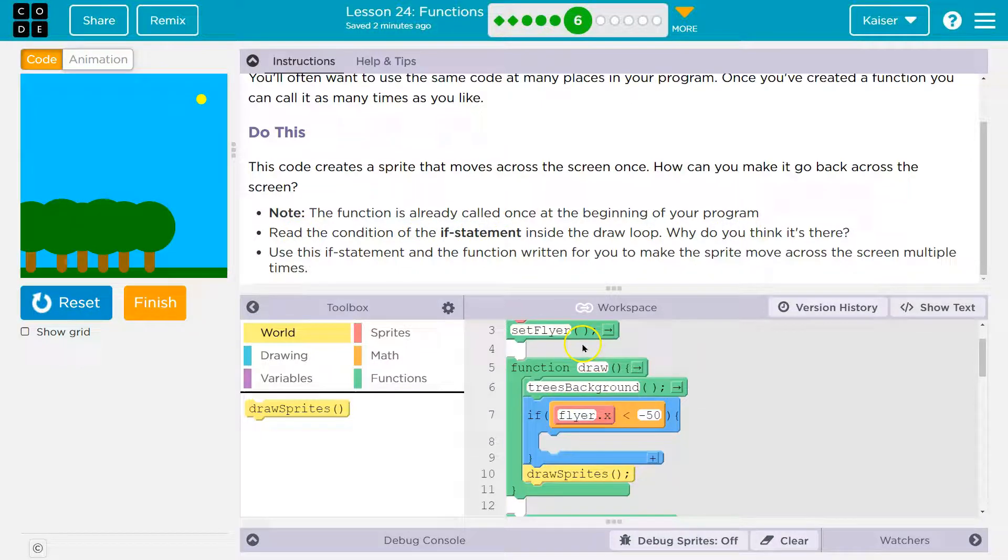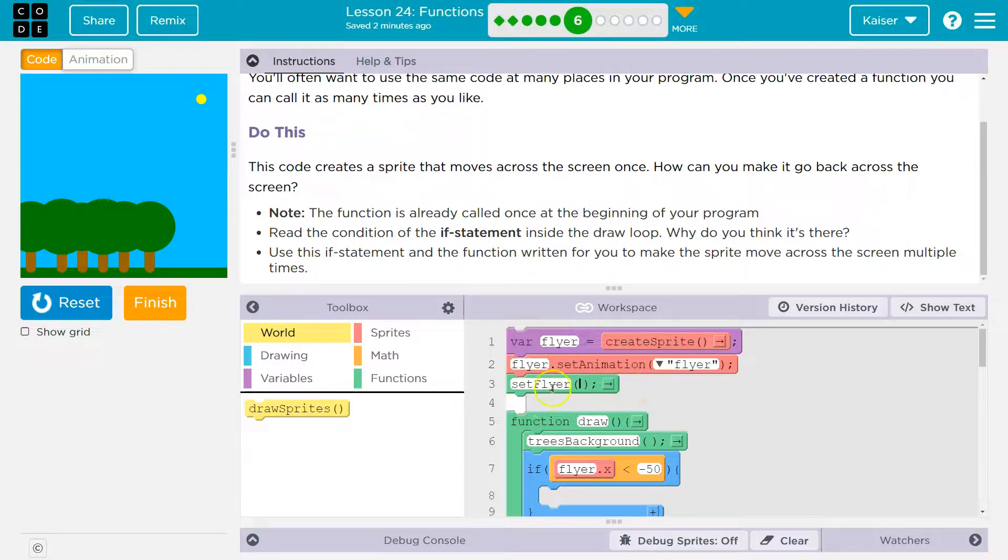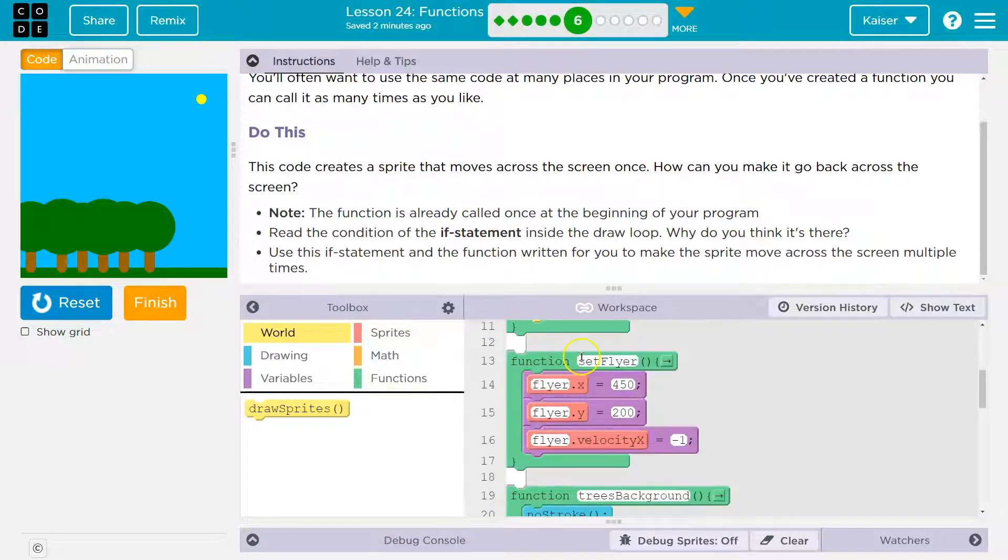Let's see. Oh, look. So this is a function call, right? Set flyer, this green block thing, is us asking the computer to run a set flyer function. Now, where is that? It's down here.